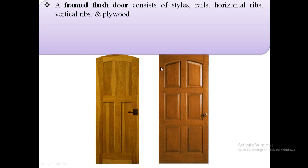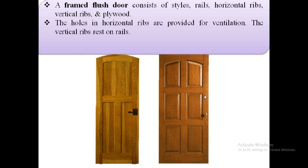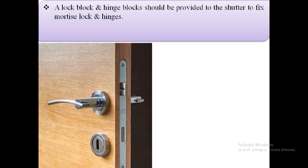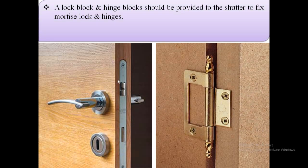This image of a framed flush door shows the stiles, rails, horizontal ribs, vertical ribs, and plywood. The holes in the horizontal ribs are provided for ventilation. The vertical ribs rest on rails. A lock block and a hinge block should be provided to the shutter to fix the mortise lock and hinges.